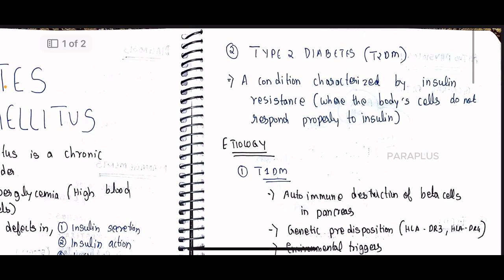Type 2 diabetes is the most common. In this condition, it is characterized by insulin resistance, where the body cells do not respond properly to insulin. Insulin is secreted by the pancreas, but the body cells are resistant to it — they do not respond properly to insulin.